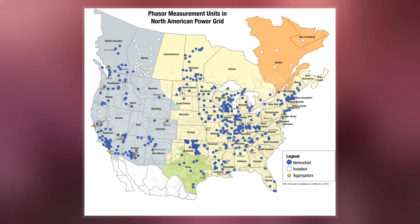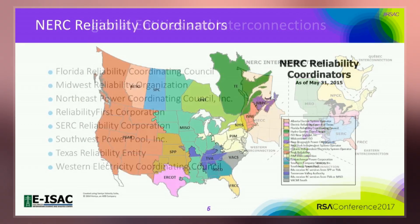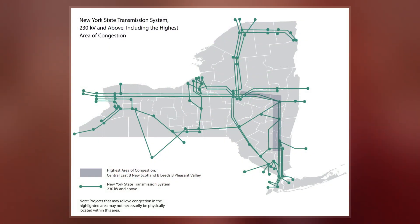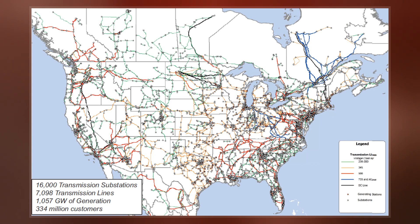Each region delivers power at a nominal 60 Hz frequency. The regions are not usually directly connected or synchronized to each other, but there are some HVDC interconnections. In the United States and Canada, national standards specify that the nominal voltage supplied to the consumer should be 120 V.